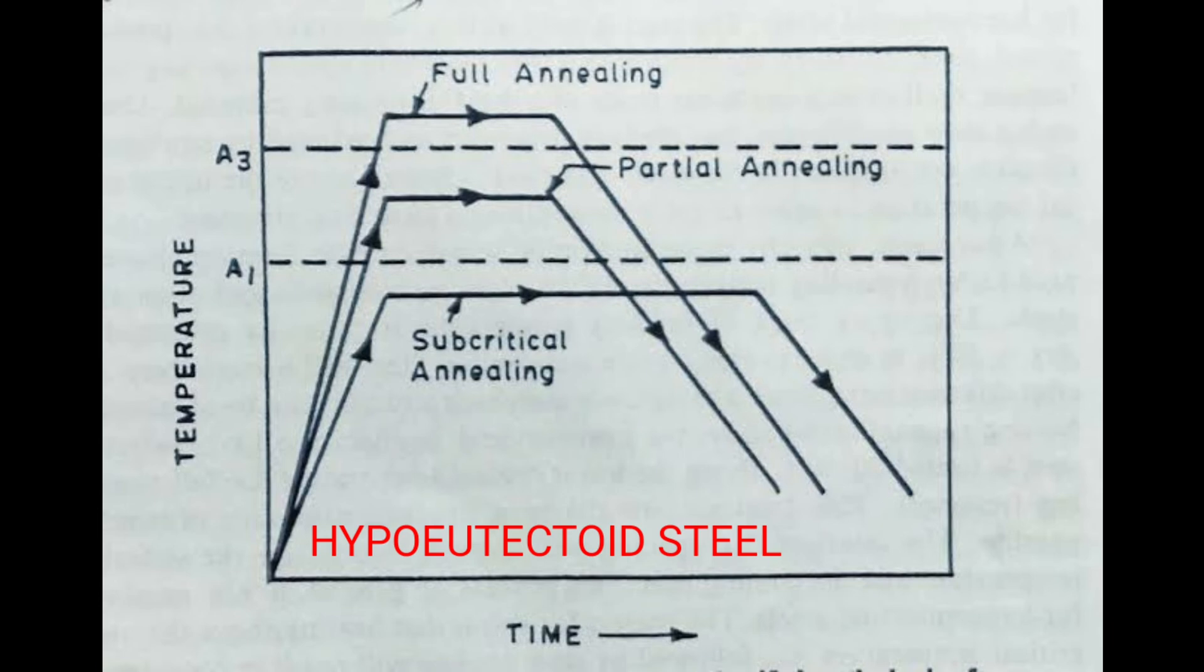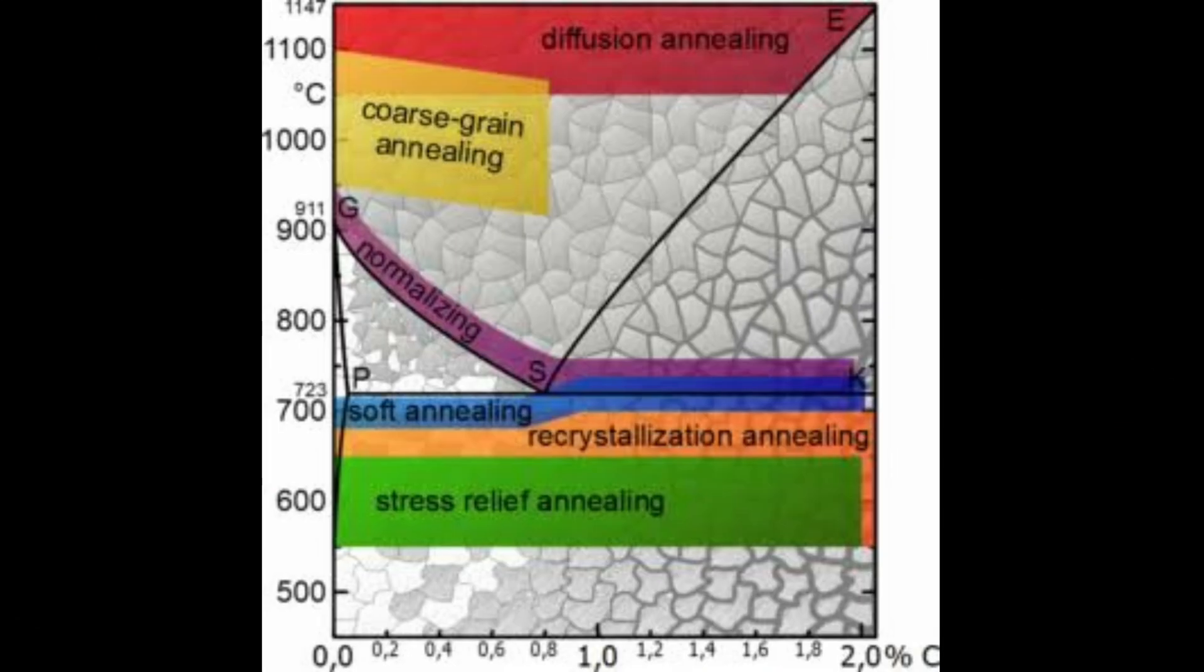In all cases hold at heating temperature and slowly cooled to room temperature. Other common types of annealing processes are isothermal annealing, diffusion annealing, recrystallization annealing, process annealing, spheroidizing annealing.